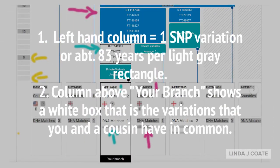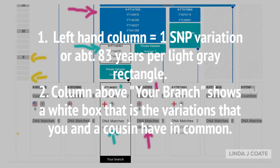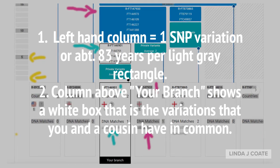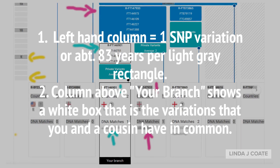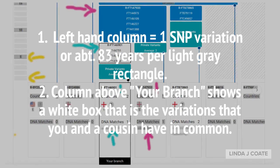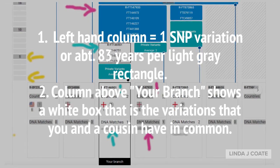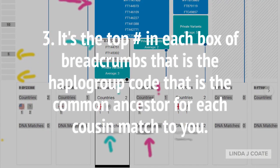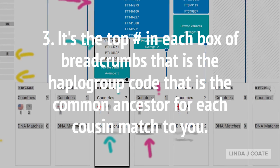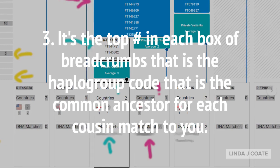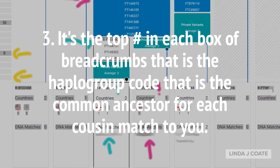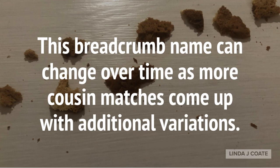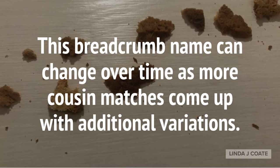Here is a summary of what you just learned. Each light gray rectangle on the left-hand side represents one SNP or variation, and that occurs about every 83 years or three generations in the male line. The column above your branch shows a white box that is the variations you have in common with a cousin. It's the top number in each box that represents a breadcrumb or code that is the common ancestor for each cousin match to you. Use the top number in each box. It's important to note that the breadcrumb name or code can change over time as more cousin matches come up with additional variations.